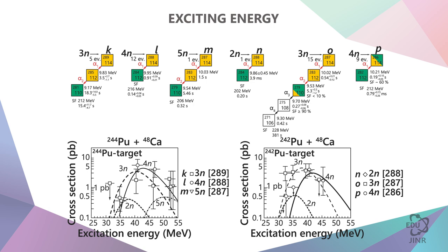Now let's change the target. Let's take plutonium-242 and irradiate it with calcium-48. And here we see three types as well: alpha-spontaneous, alpha-alpha spontaneous. In principle, sometimes a decay gap appears here with a 10% chance of alpha decay taking place instead of spontaneous fission.